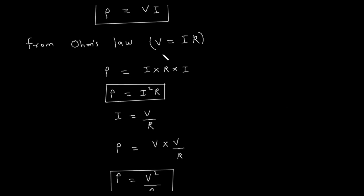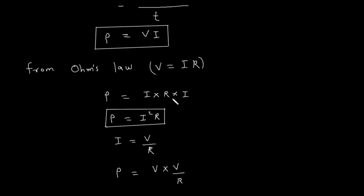From Ohm's law, V is equal to I into R. Now power is equal to V into I. If we substitute I into R in place of V, then we get this formula. This I into I is I square, so power is equal to I square R.